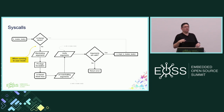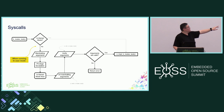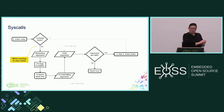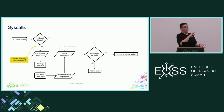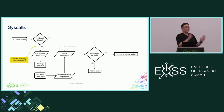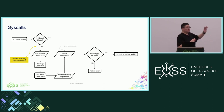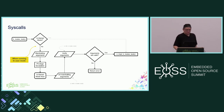The return path is pretty similar — you package the return value, go through the privilege de-escalation process to go back to user mode, and then unpackage the return value in a way so that the side calling this function acts like it's just another function call. So the syscall is kind of hidden behind the scenes for the caller.